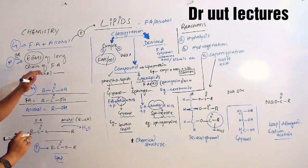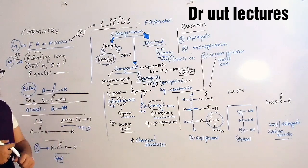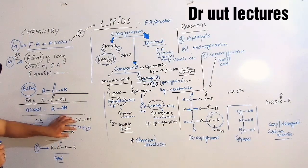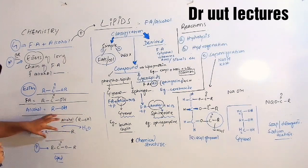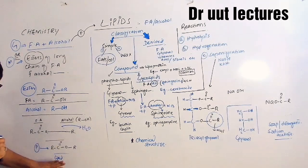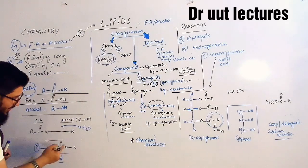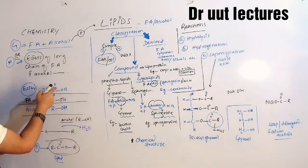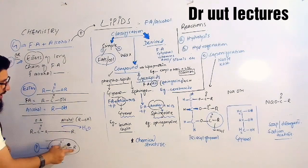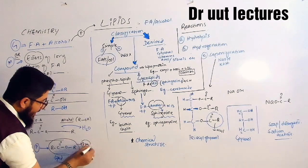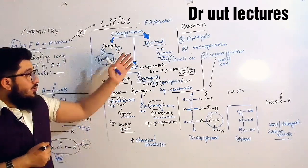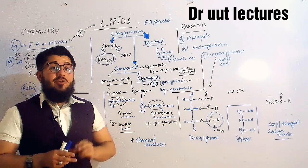Now go towards the next definition: esters of long chain fatty acid and alcohol. The same definition, just with ester included. Here is our alcohol, here is our fatty acid — their ester is also called a lipid. In the first definition we said when these two combine they make a product called lipid; now we say the ester of fatty acid and alcohol is called lipid. You can compare this structure with the ester group: R — carbonyl (C=O) — oxygen — R. So the ester of fatty acid and alcohol is also called a lipid.